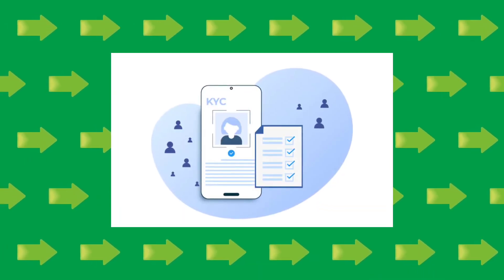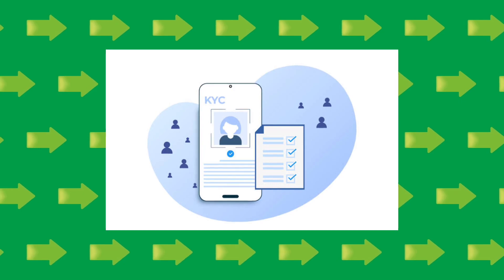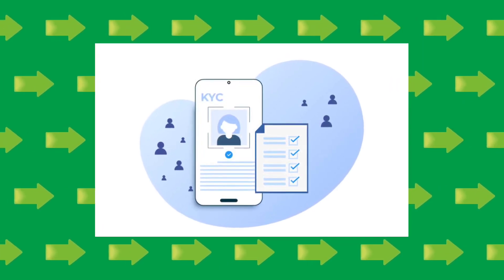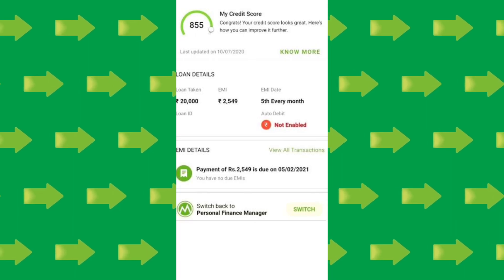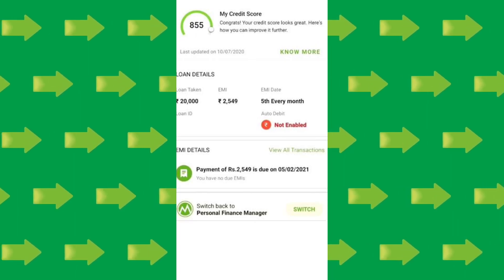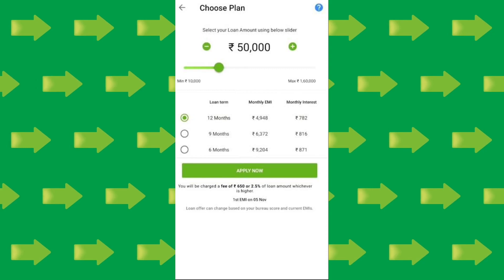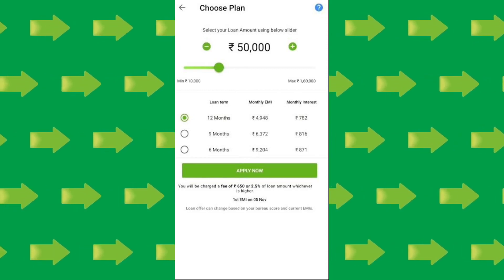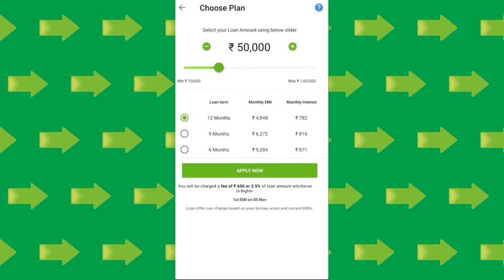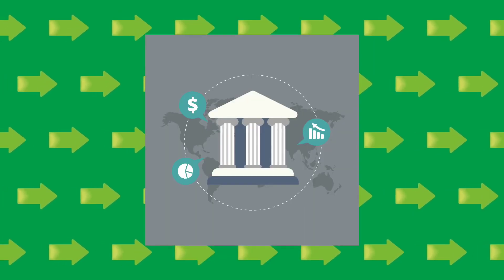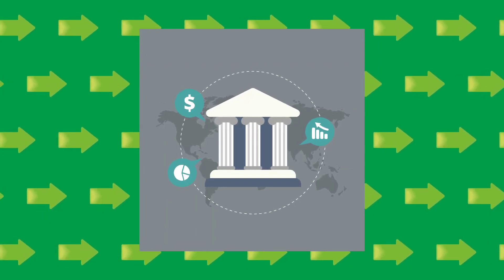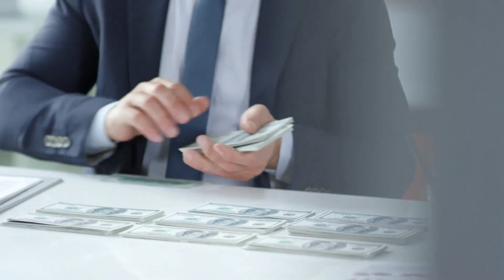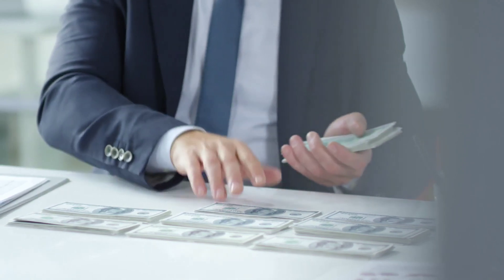Confirm and continue, then click on the KYC step. After completing all the steps and KYC, your loan will be approved. Select your loan amount, and each month you can repay the loan. Add your bank account number so the loan amount is instantly credited to your account.